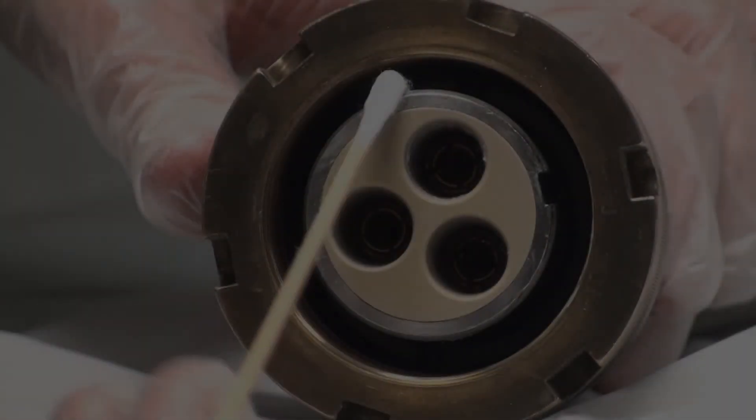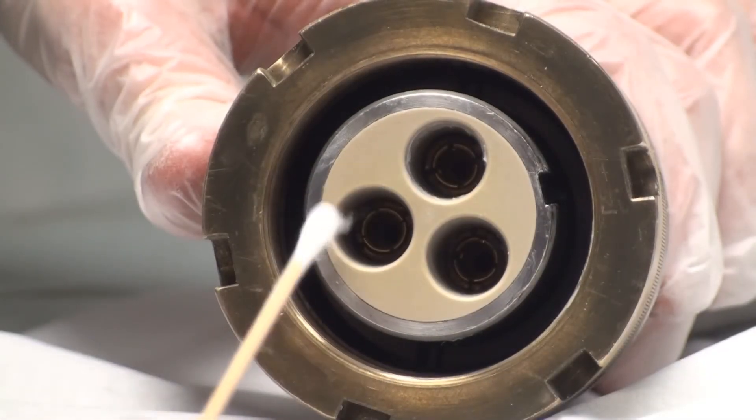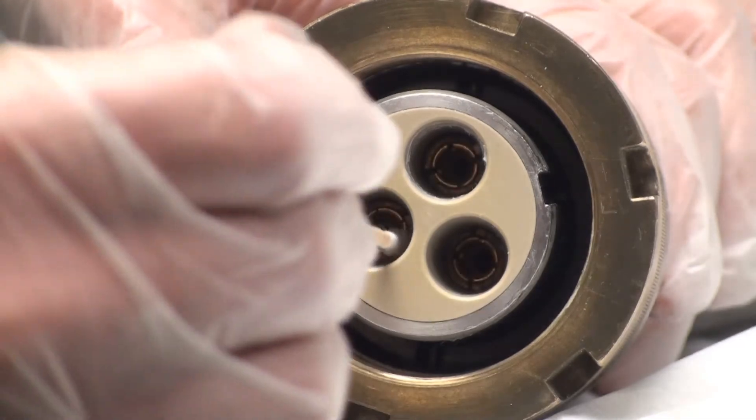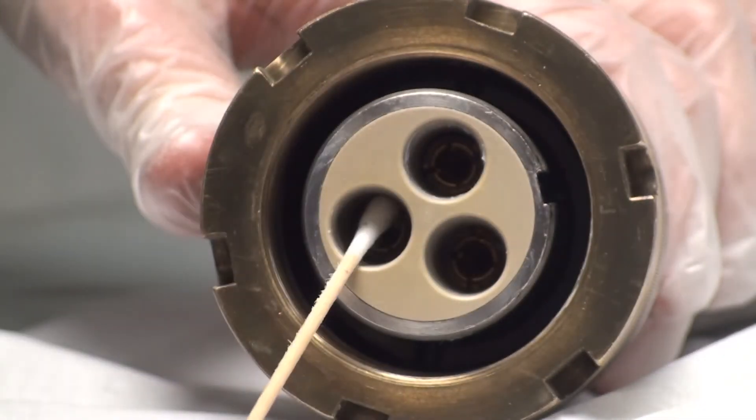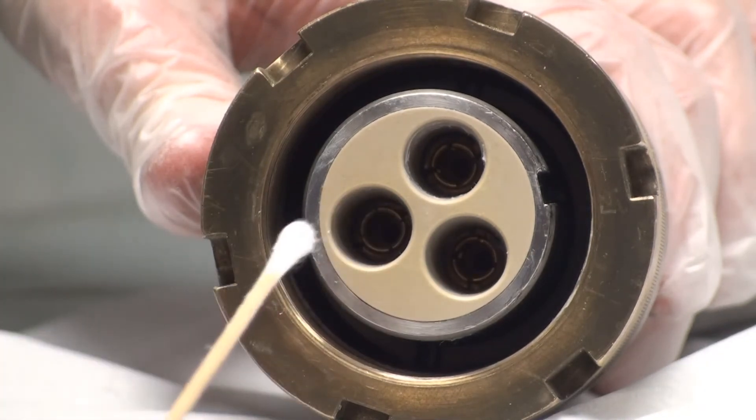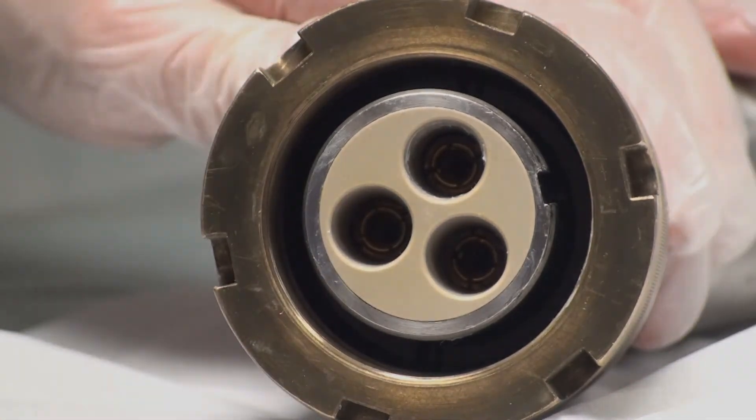If the pin or socket areas do become contaminated, they must be cleaned. Use a little solvent degreaser and a clean lint-free cloth or cotton swab. Always allow to dry before mating.